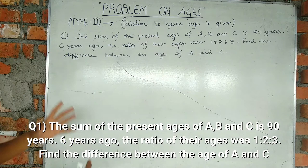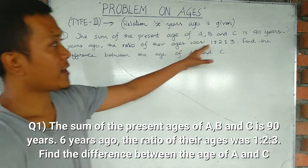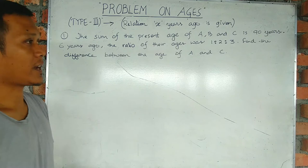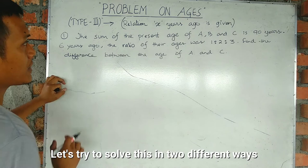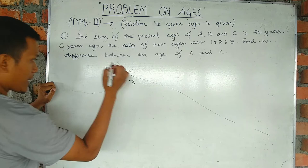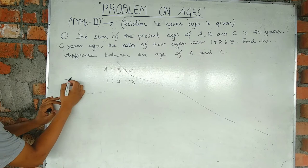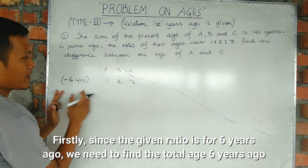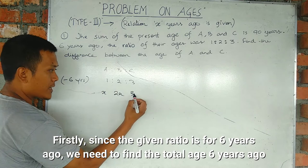The sum of the present age of A, B, C is 90 years. The ratio is 1 is to 2 is to 3. The ratio is 6 years ago.